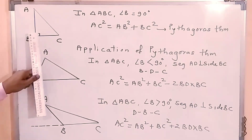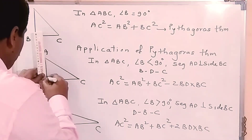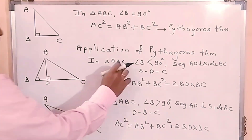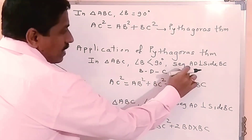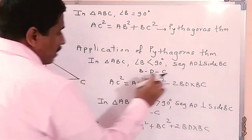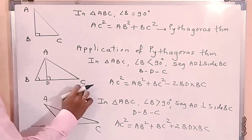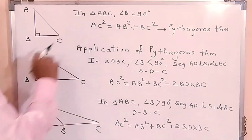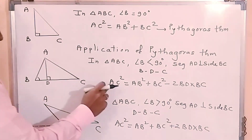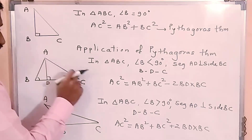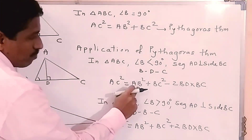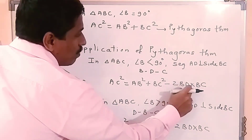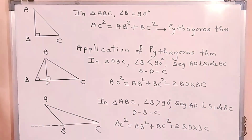For the acute angle case, we draw a perpendicular from vertex A to side BC, where segment AD is perpendicular to BC such that D lies on BC. The application of Pythagoras theorem gives: AC square equals AB square plus BC square minus 2BD into BC.